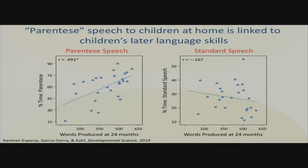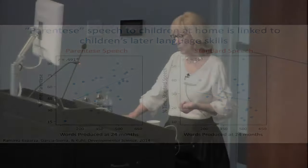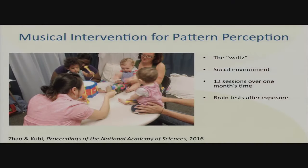You can just take SES out of the equation. If kids are getting highly engaged, highly social, face-to-face parentese, their language development zooms forward — not so much if they hear fewer words or standard speech. We're also showing that music intervention makes a difference in childhood at that same nine-month period. If you play the waltz to babies in social groups and they use motor skills to tap out the rhythm, whether it's the Blue Danube or Take Me Out to the Ball Game, we can show brain effects after 12 sessions.